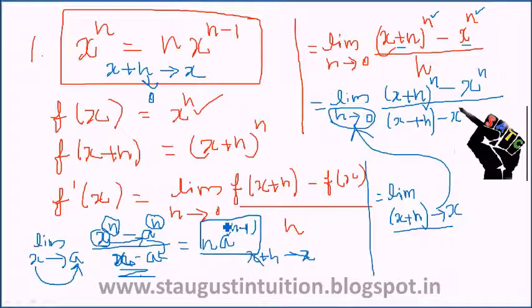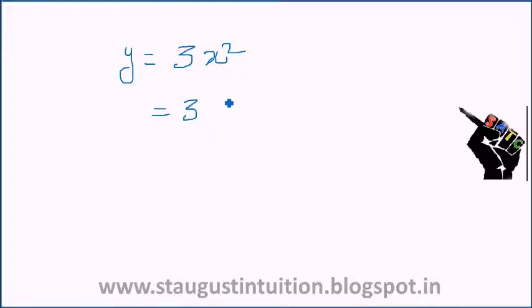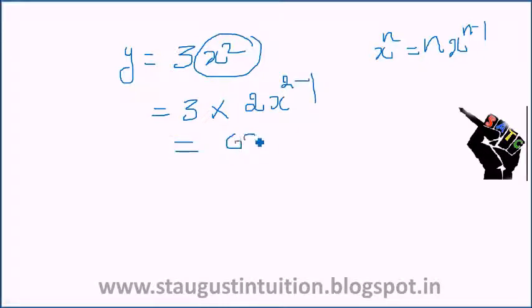We apply this formula — the derivative. For example, find the derivative of y = 3x squared. Using d/dx of x raised to n equals n times x raised to n minus 1, we get 3 times 2 times x raised to 2 minus 1, which gives the answer 6x.